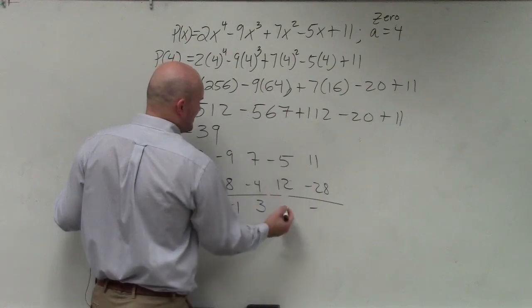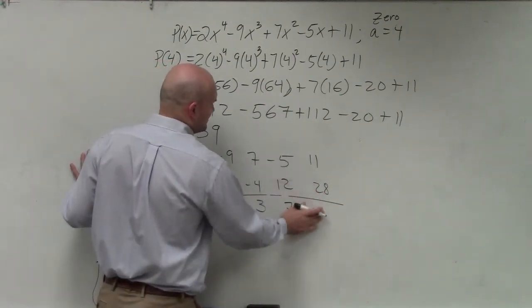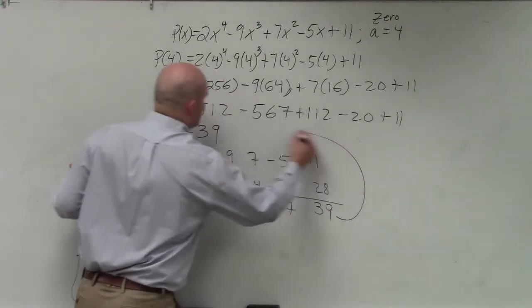3 times 4 is 12. That becomes a positive 7. 7 times 4 is a positive 28. There we go. That becomes 39.